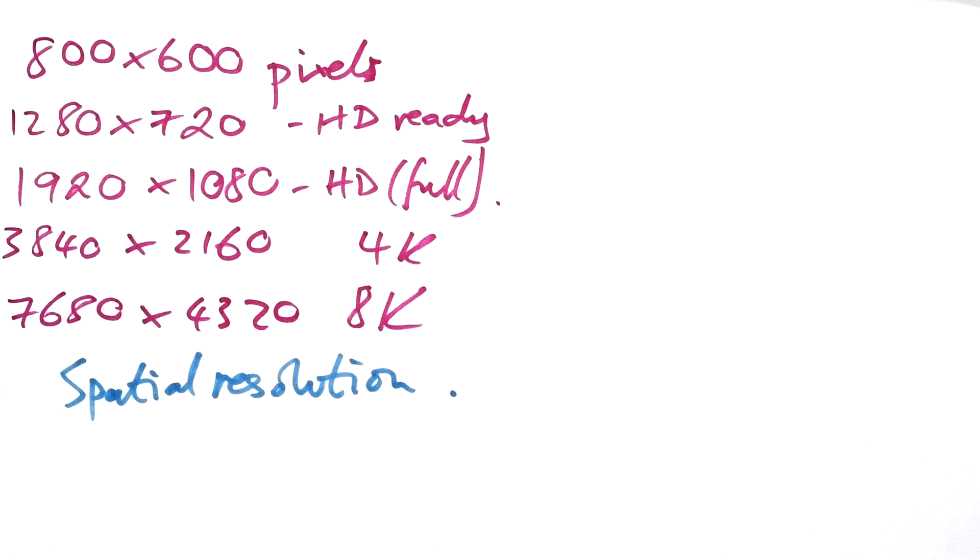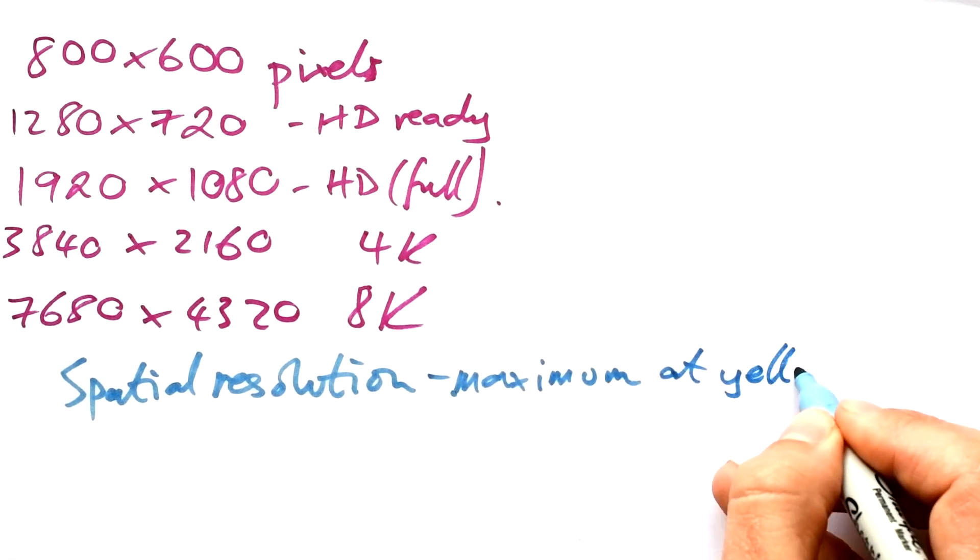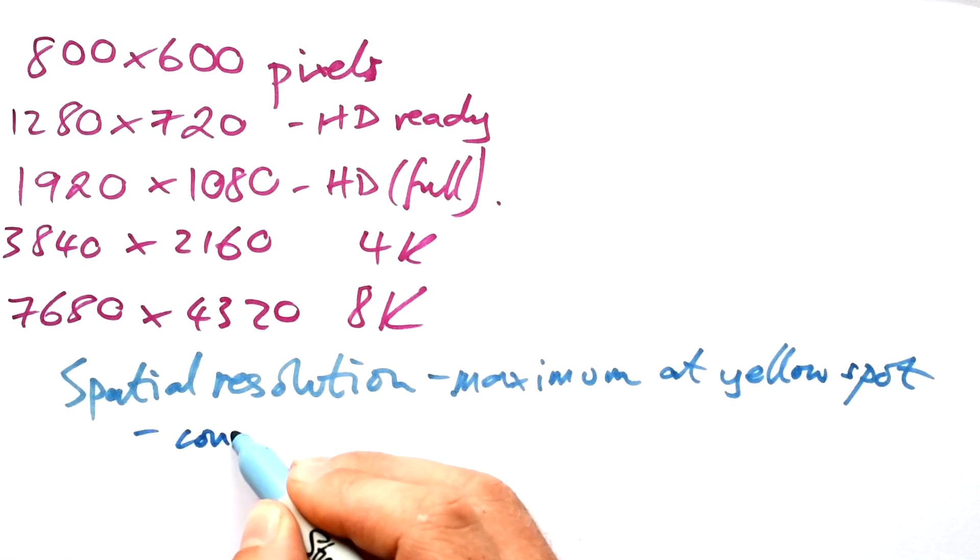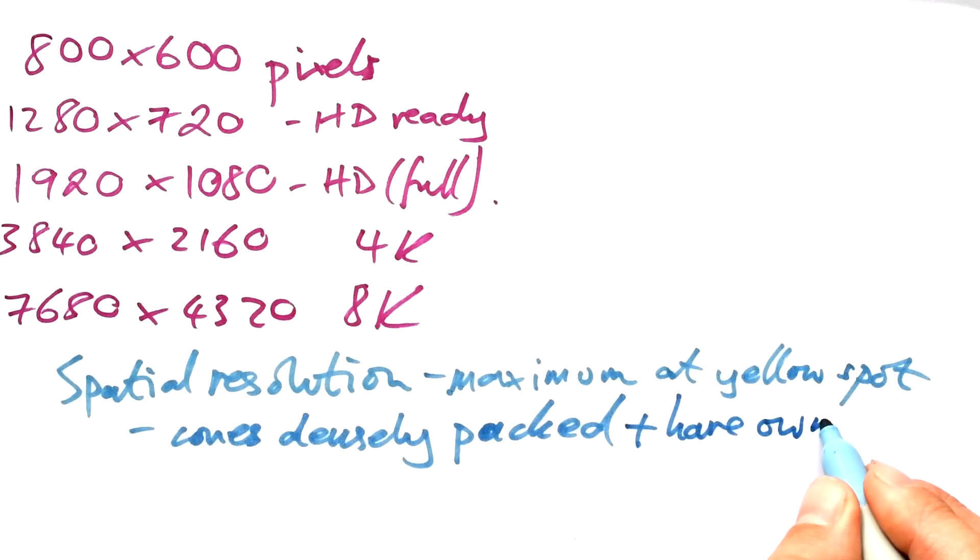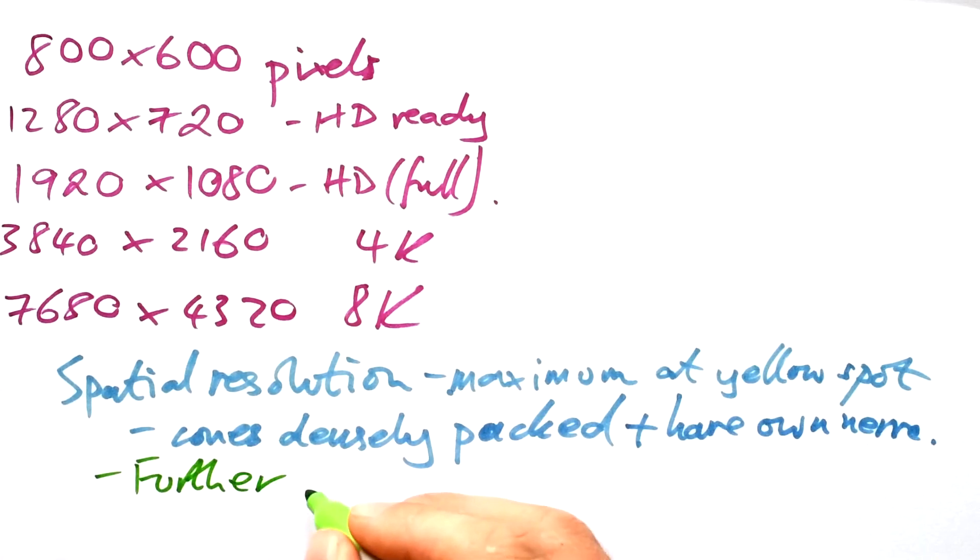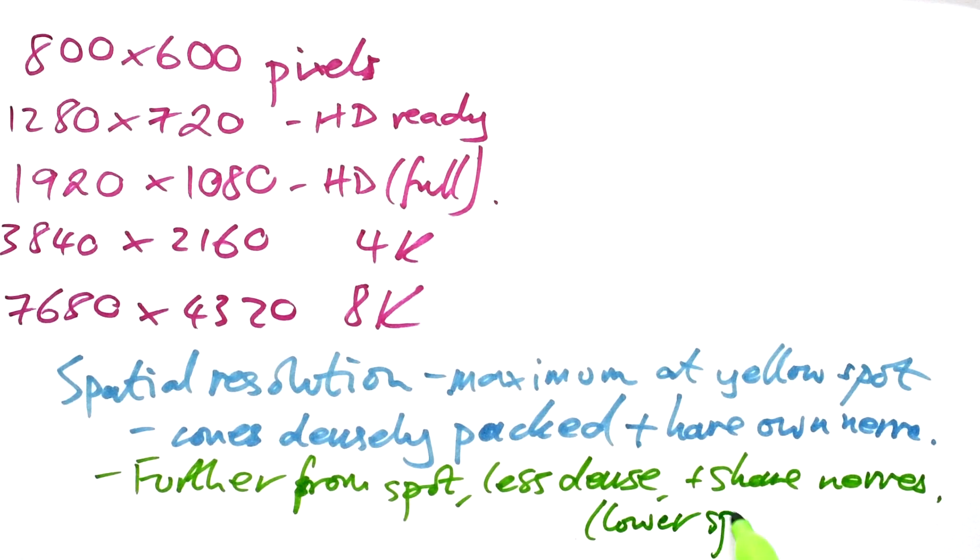Now, we are getting into a little bit of brain weirdness because no one really knows how these signals are interpreted by the brain. But we do know that you have the maximum resolution, as it were, at the yellow spot, the yellow fovea where the spot is. And that's because the cones are densely packed at that point. There's lots of them. And also, they all have their own nerve, whereas further from the spot, less densely packed, and they share nerves as well. So we have lower spatial resolution.